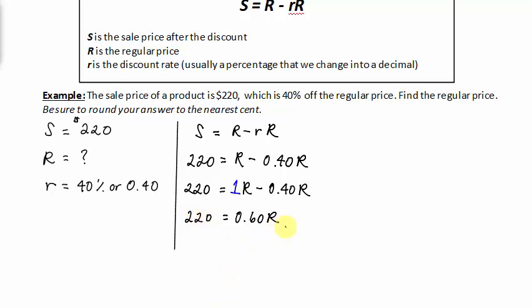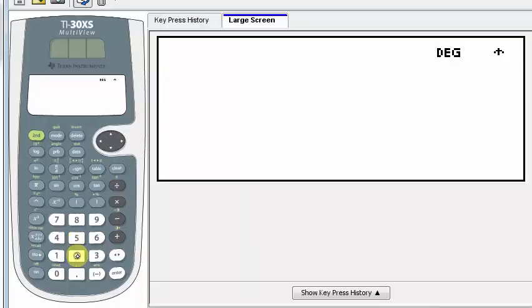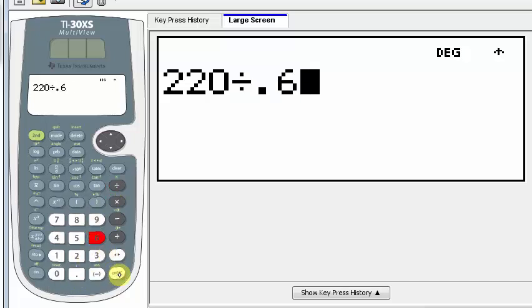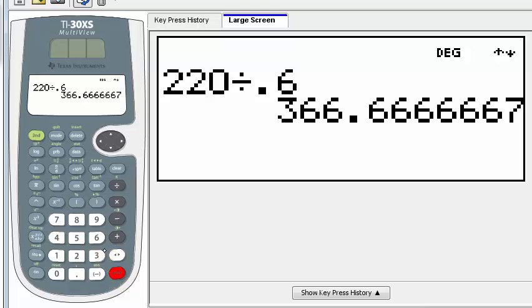Dividing each side by .60 to solve for R, we get, using our calculator, 220 divided by .6 is 366.6, well, repeating.